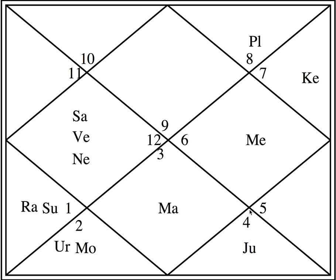Now where are the second and third lords placed? They are the same because both the second and third houses are ruled by Saturn — Capricorn is number 10 and Aquarius is number 11, both ruled by Saturn. Saturn is placed here. Counting: 1, 2, 3, 4 — so the second and third lord Saturn is in the fourth house in the sign of Pisces, number 12, along with Venus and Neptune.